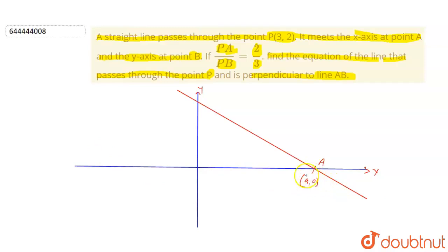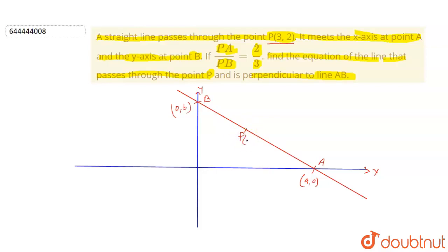That's why we can say this point is A(a, 0) and this point will be B, which is (0, b), because on the y-axis the x-coordinate will be 0. Now, this line passes through point P which is (3, 2) — both coordinates are positive, so this point is on the first quadrant. PA by PB = 2/3 means PA is 2 and PB is 3.